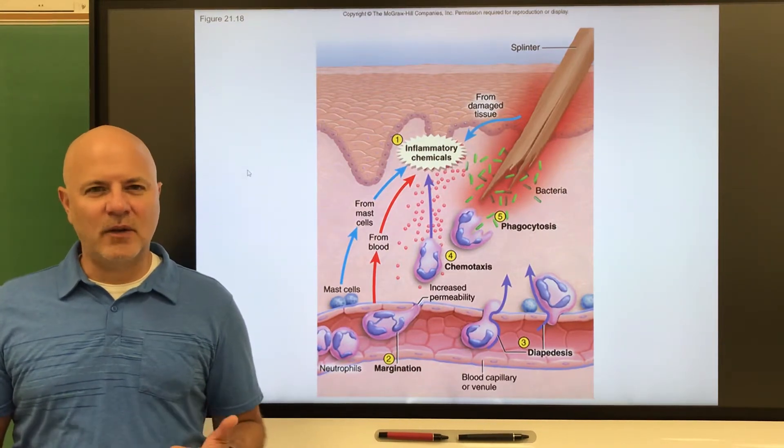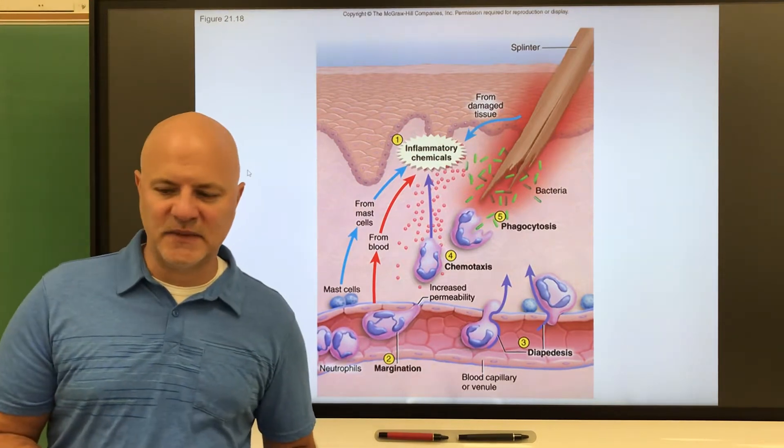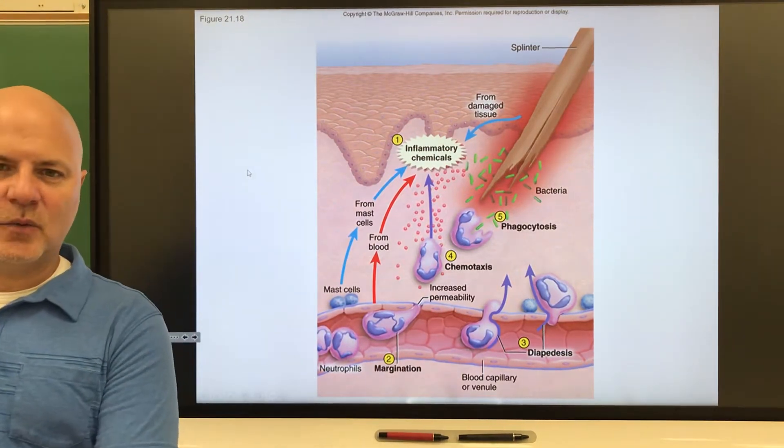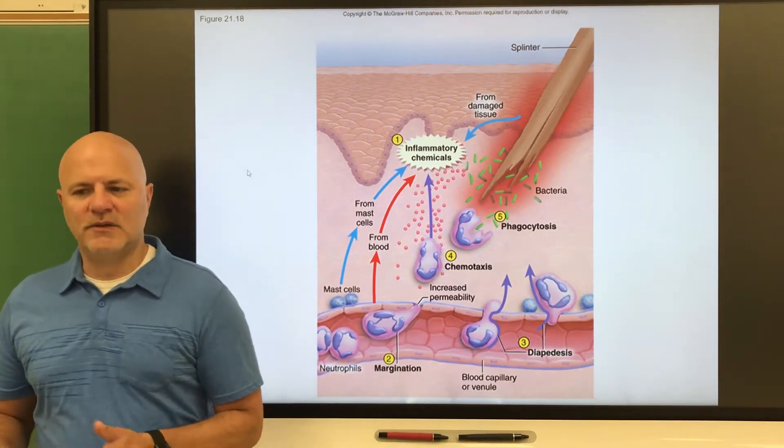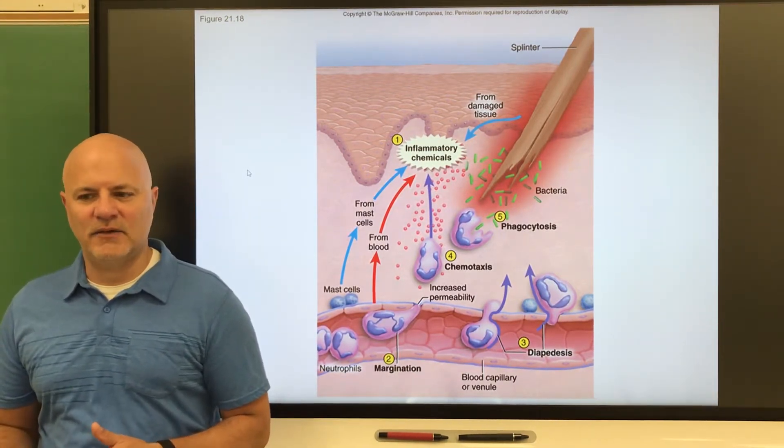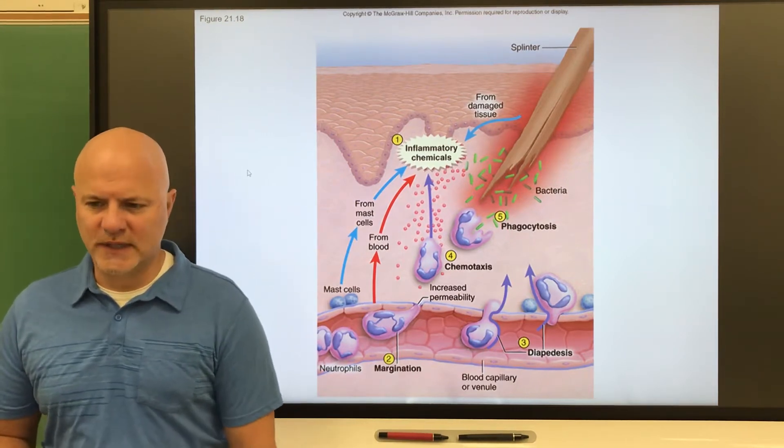Next is cellular or cell mediated immunity. This is immunity by the lymphocytes themselves, T lymphocytes. These are going to attack mainly cells. They're going to attack infected cells, virus infected cells, parasite infected cells, cancer cells, and also foreign cells.